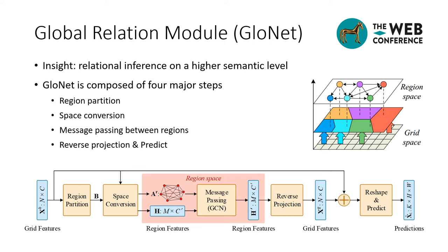After local feature extraction, the next stage is global relation modeling. Motivated by relation networks seizing relations between objects in images, we devise a global relation module to capture global spatial dependencies in a more economical way than previous attempts. The major insight is that we do not reason global dependencies in the original grid space, which causes O(N²) complexity. Instead, as depicted in the right-hand figure, we first perform a conversion from grid space to region space, then infer regional correlations globally by a message passing scheme, and finally project the region features back to grid space to obtain global-aware grid features. In a nutshell, our GlowNet is composed of four major steps.